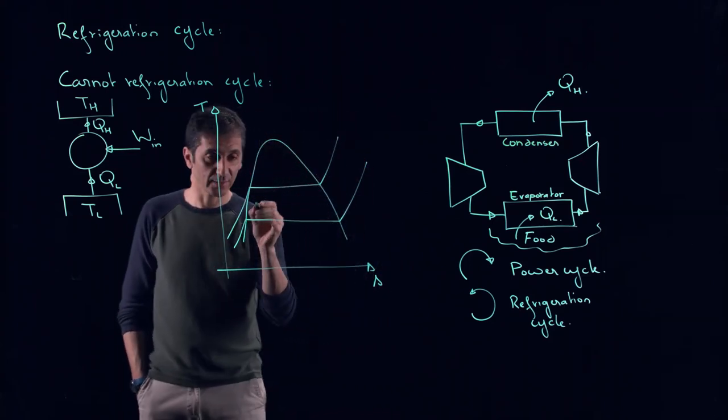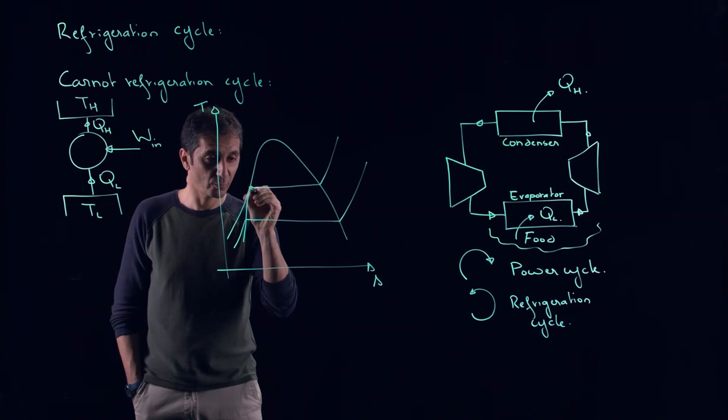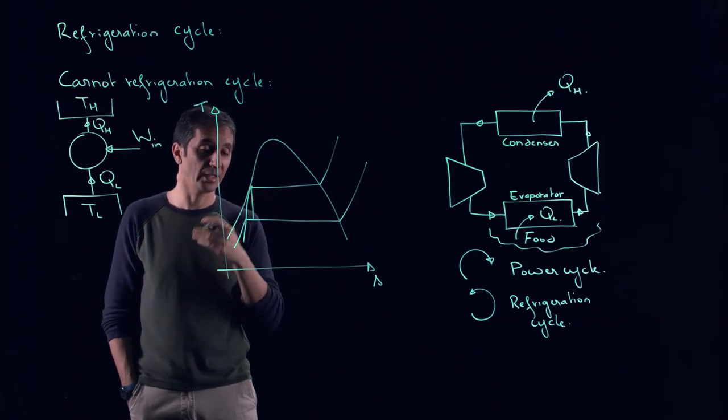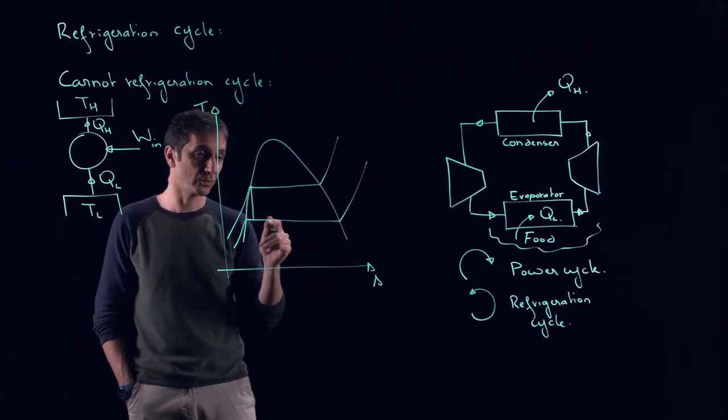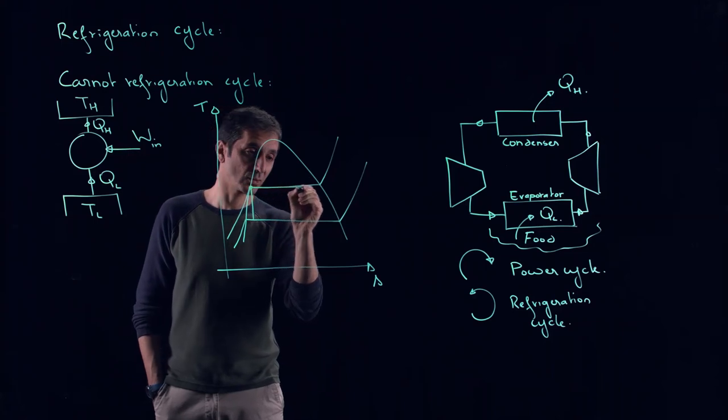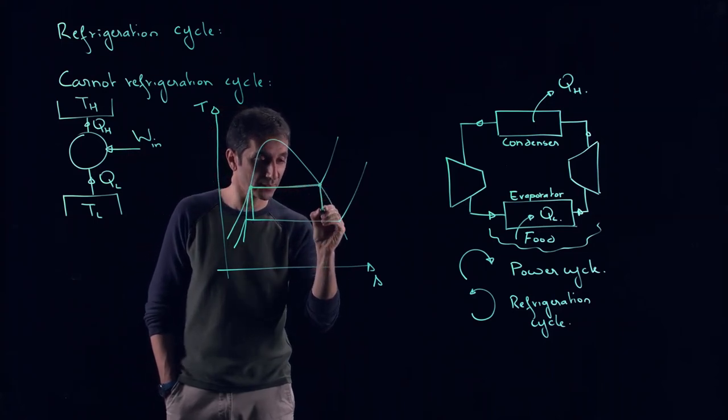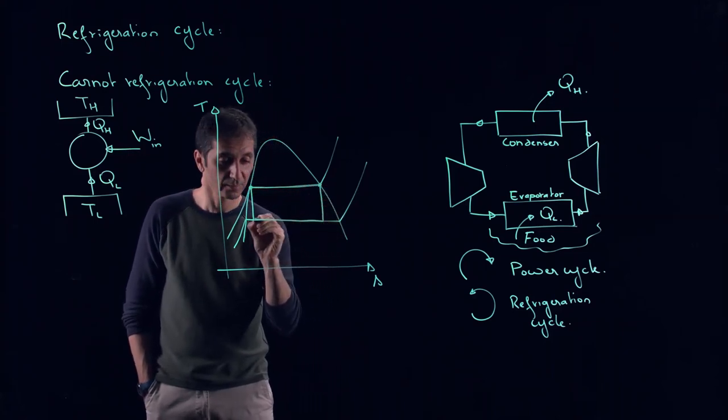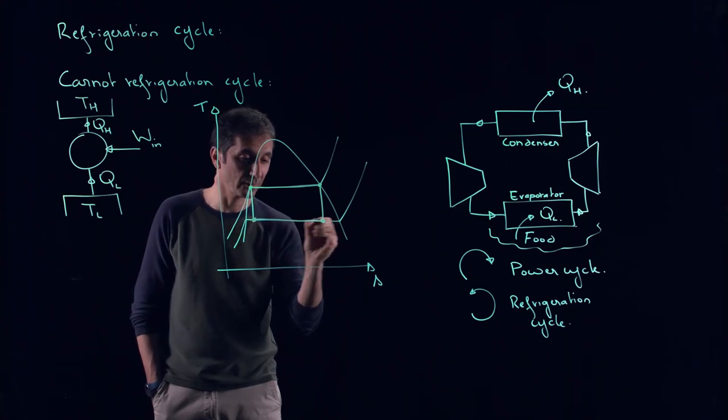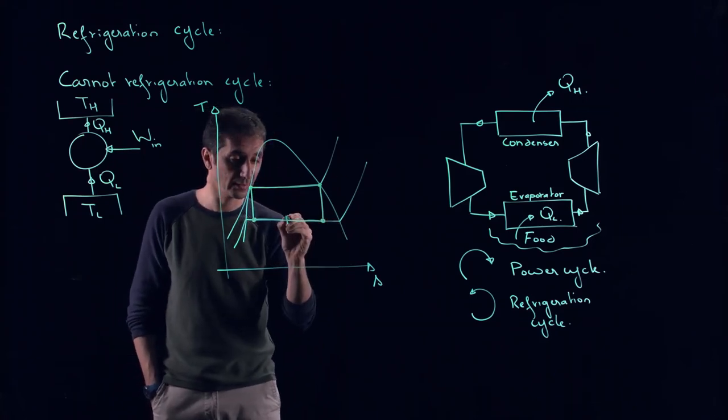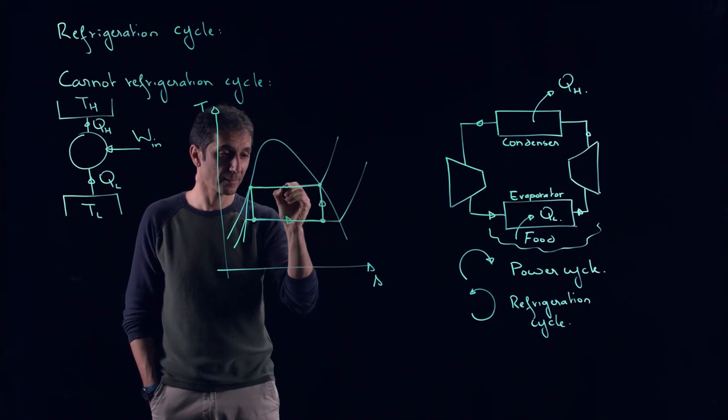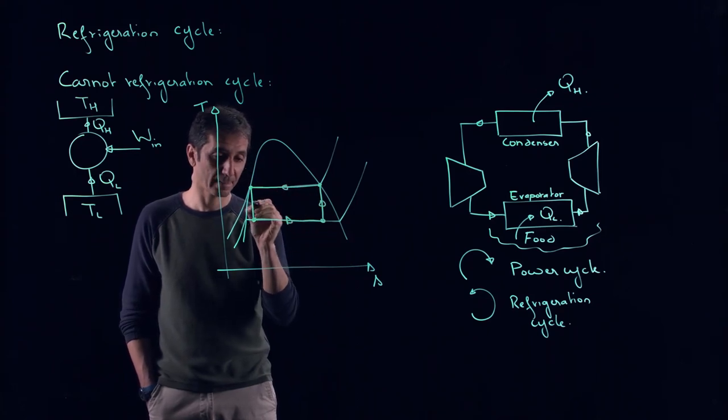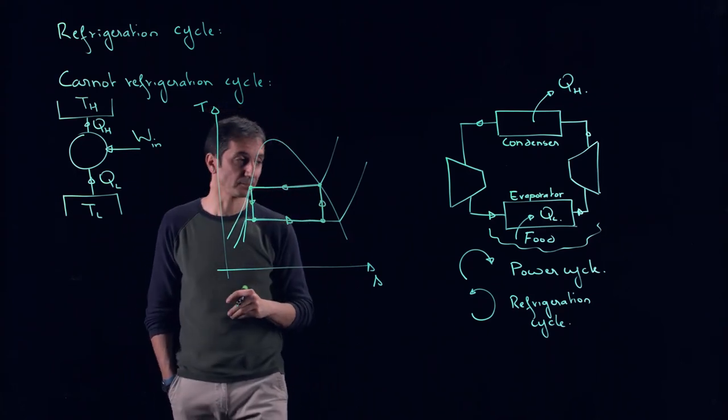Now, if we sketch our T-S diagram here, we will have the Carnot cycle. We have two isentropic, two isothermal processes. Here are the different processes, and we are rotating anti-clockwise.